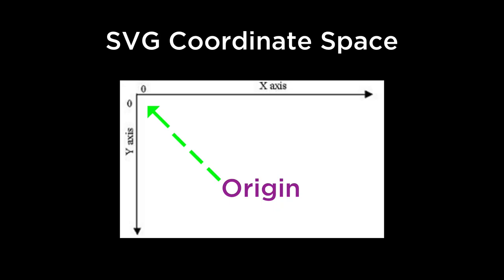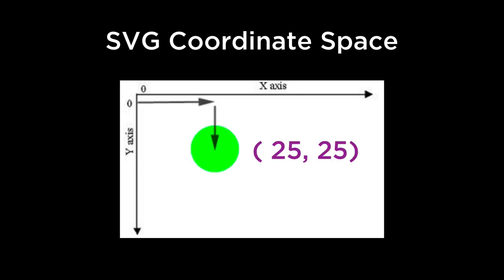SVG coordinate space works in the same way that mathematical graph coordinate space works, except for two important features. 1. SVG coordinate space has its origin point (0, 0) at the top left. 2. SVG coordinate space has the y coordinate growing from top to bottom. Which means when given the coordinates of 25 comma 25, we go 25 units from the left to the right, and 25 units from the top to the bottom. If we then went to coordinates 50 comma 50, we would go 25 more units to the right and 25 more units down.